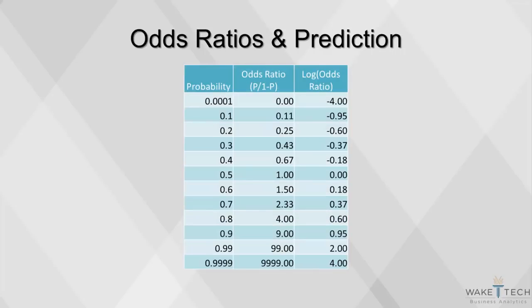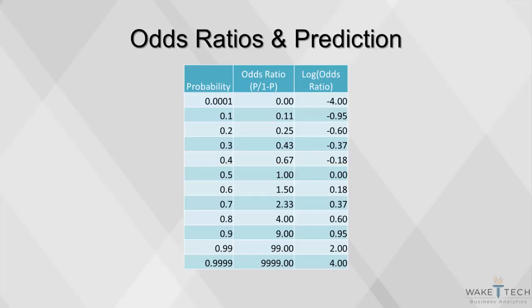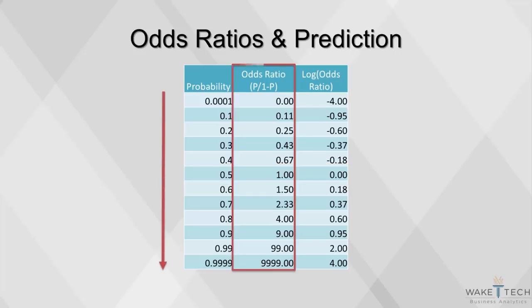These are the odds ratios and log of odds ratios for various probabilities. An important point to understand is how the odds ratios are tied to the probabilities. A 50% probability, or probability of 0.5, is the same as 1 to 1 odds. The log of the odds ratio at that point is equal to 0. As probability increases, the odds ratio increases from 0 to infinity, while the log of the odds ratio can become any value.